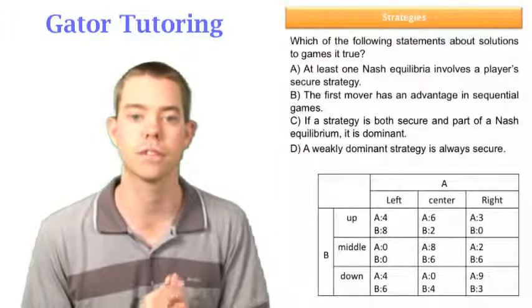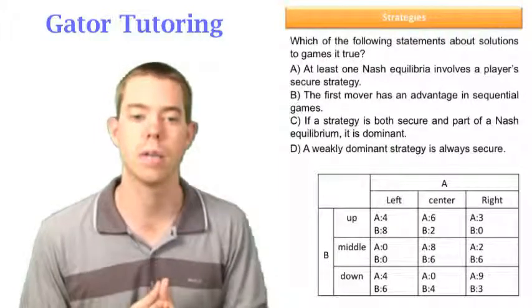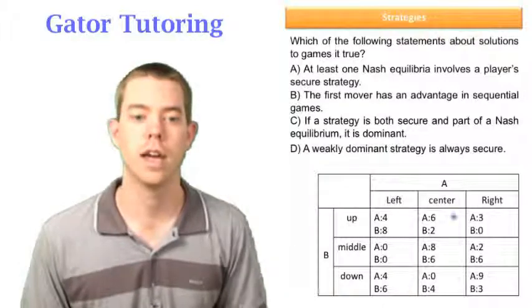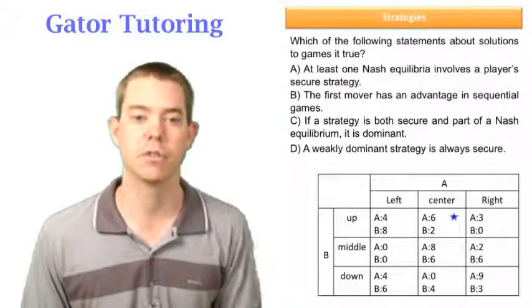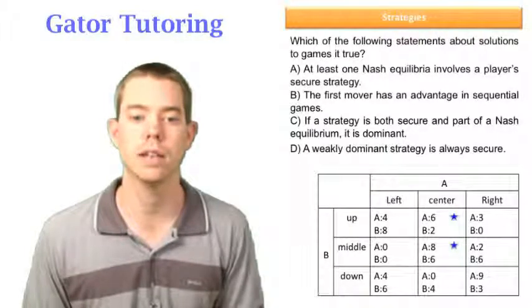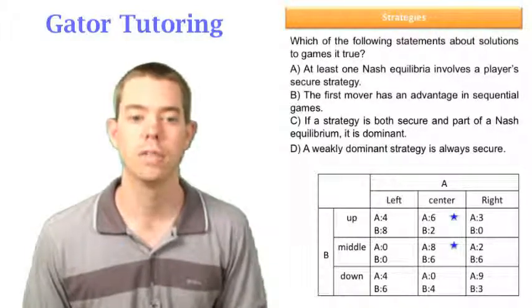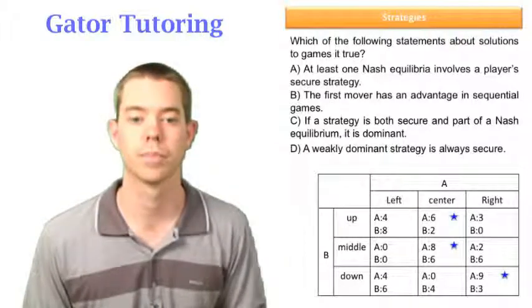A can choose left, center, or right. B can choose up, middle, or down. For A: if B chooses up, A picks 6 over 4 and 3. If B chooses middle, A picks 8 over 0 and 2. And if B chooses down, A picks 9 over 4 and 0.